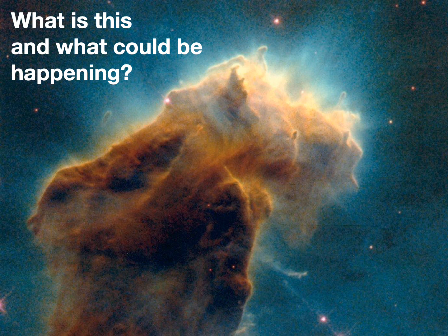What is this and what could be happening? It's an enormous cloud of gas and dust, mostly hydrogen. It's a stellar nursery in the constellation of Orion where massive amounts of hydrogen are collapsing to form stars. And this is what we're going to be talking about today: the life cycle of stars.